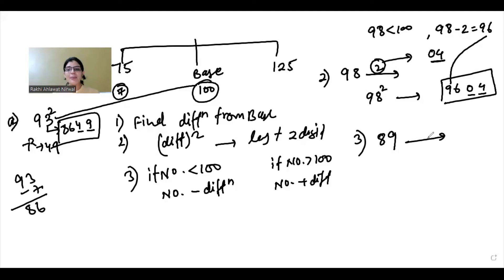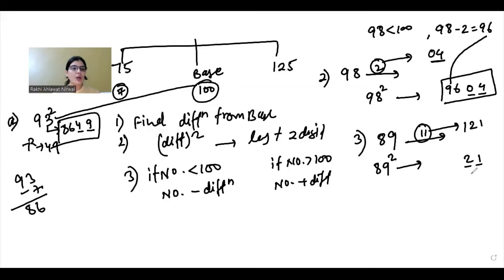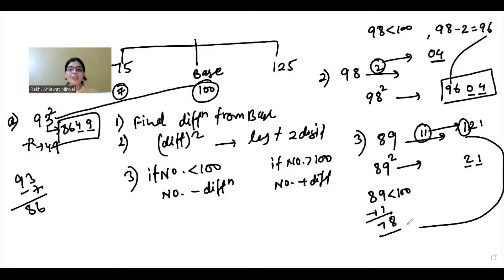Another question: find 89 squared. First find the difference: 100 minus 89 is 11. Then 11 squared is 121. So the last two digits of the answer will be 21. Now 89 is less than 100, so 89 minus 11 equals 78. The 1 from 121 is carried forward, giving us 79. So 89 squared is 7921.